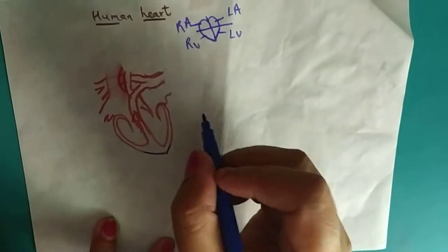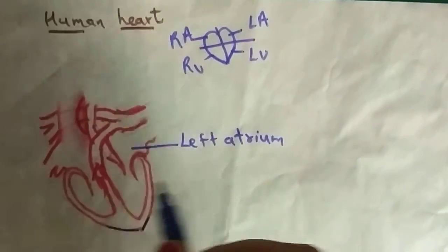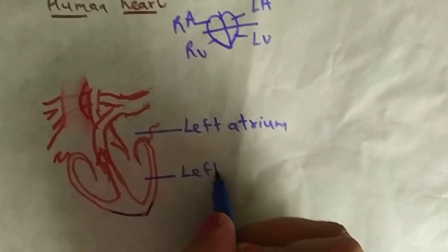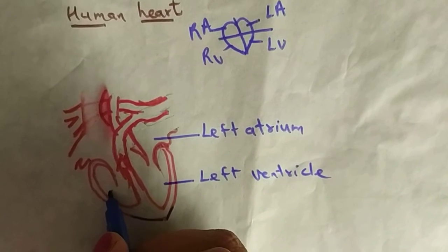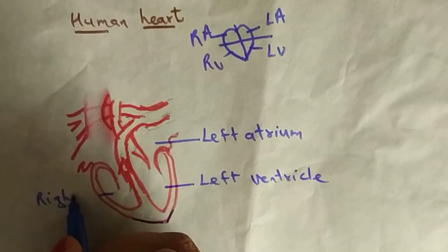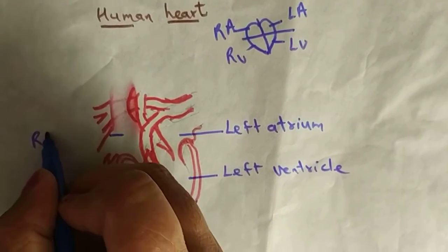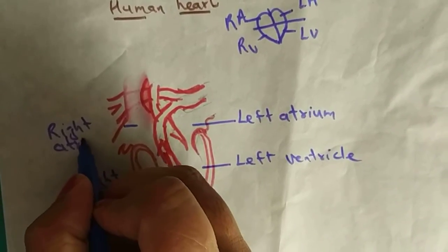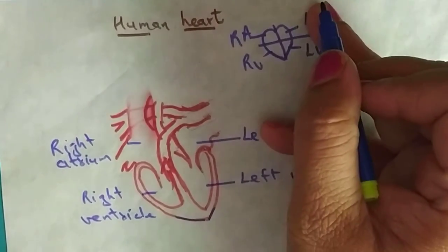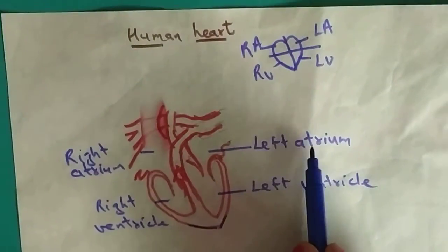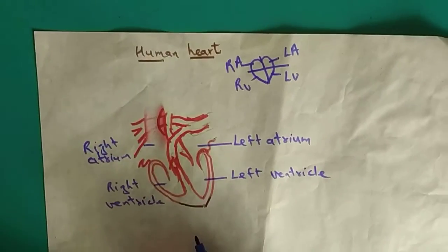In this heart structure, this is the left atrium and this is the left ventricle. If this is the left side then this is the right side — the right ventricle and the right atrium. The human heart is divided into four chambers. The upper parts are called auricles and the lower are called ventricles: left atrium, right atrium, left ventricle, and right ventricle.